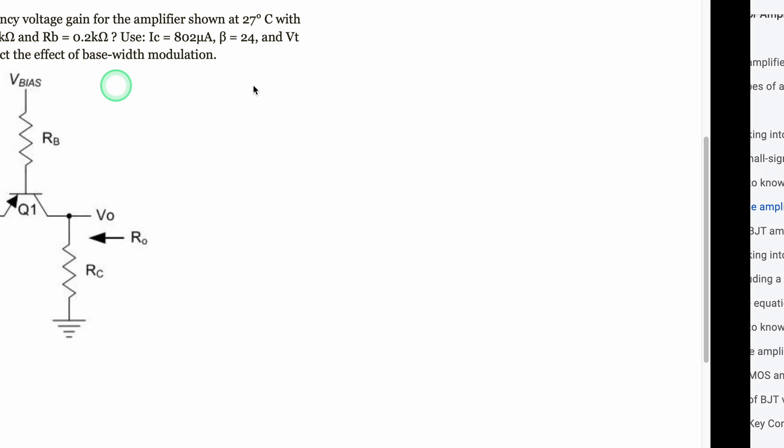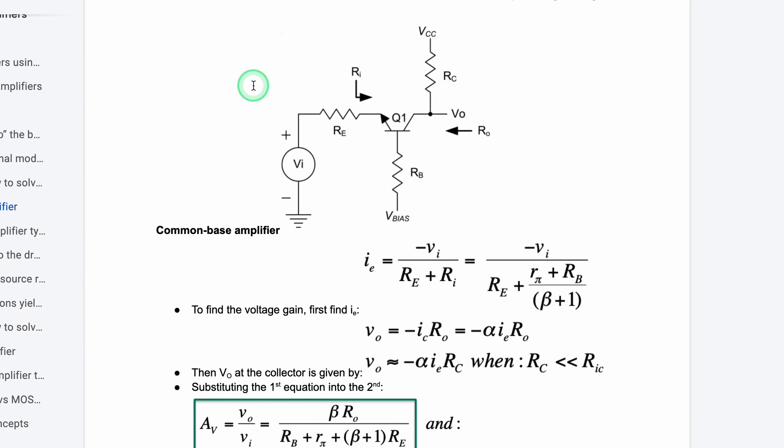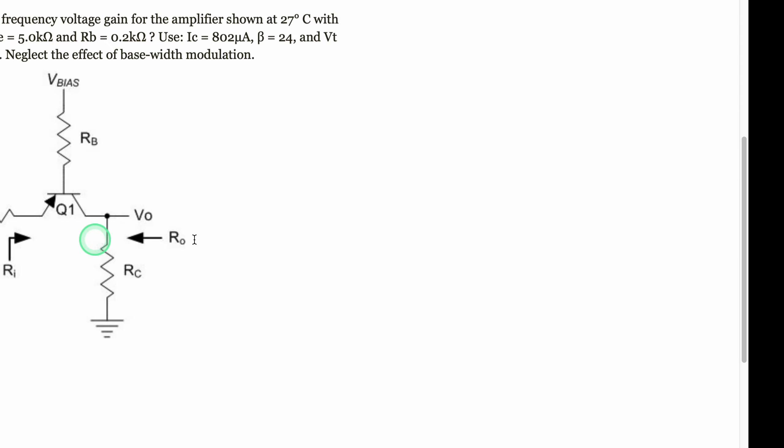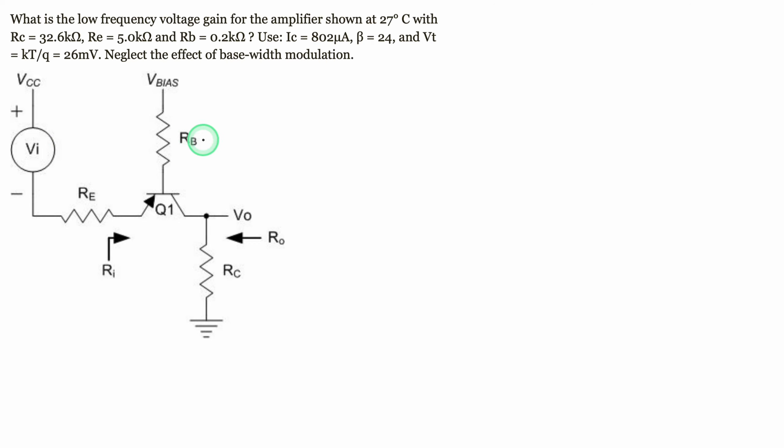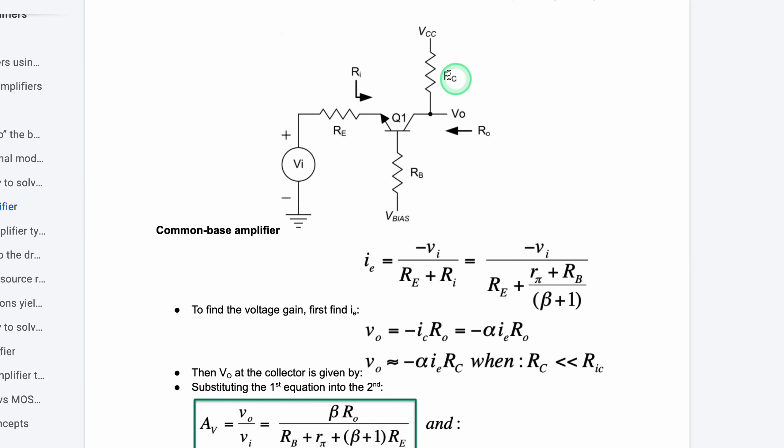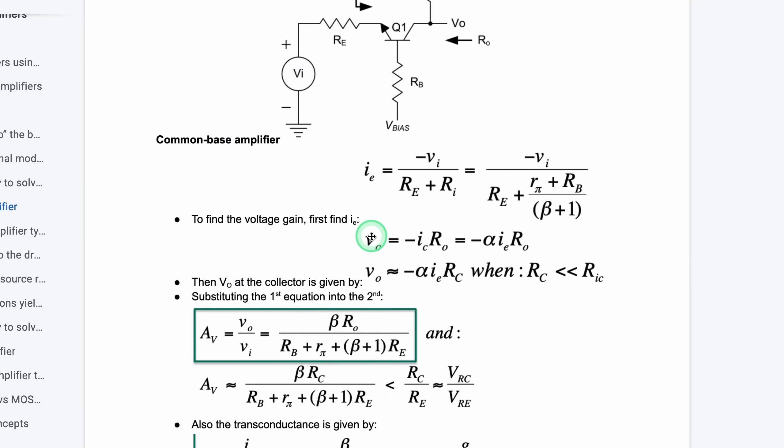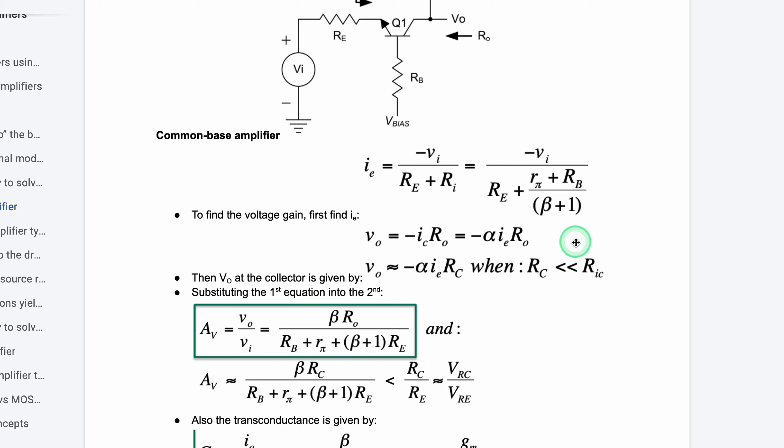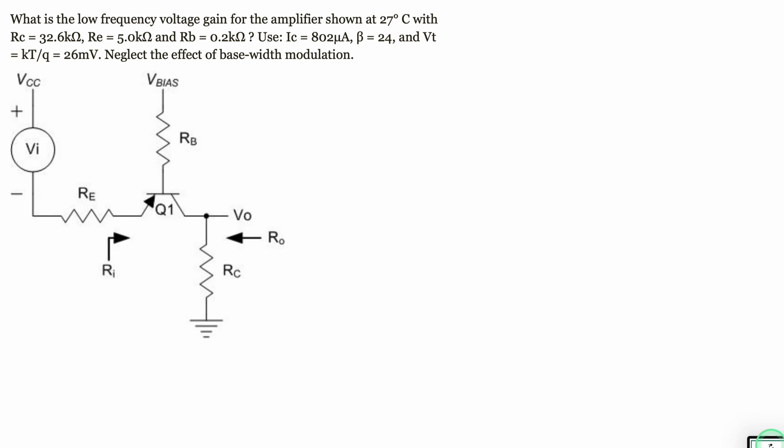For this problem we can look at the notes linked below the like button. We're going to find a common base amplifier very similar to what we have here. It looks kind of like the opposite but is the same form we're going to be looking at. When we're looking at something like this, we want to find our gain, represented by Av. The question is asking for the voltage gain, so that's exactly what we're going to do.